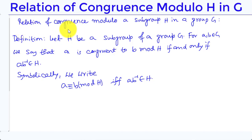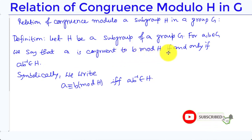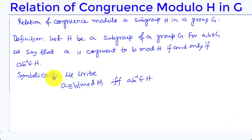A Relation of Congruence Modulo a Subgroup H in a Group G. Definition: Let H be a subgroup of a group G. For A, B belonging to G, we say that A is congruent to B modulo H if and only if A into B inverse belongs to H. Symbolically, we write A ≡ B (mod H) if and only if A·B⁻¹ ∈ H.